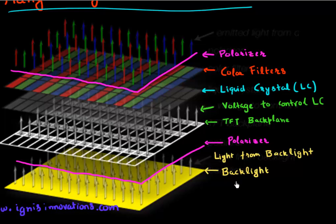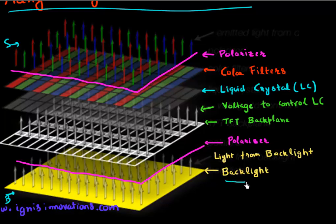So the very first layer, starting from the bottom all the way to the surface — this is the bottom and this is the surface of my LCD. I can see like seven or eight layers in between these two. The very first layer at the bottom is the backlight, which is giving the brightness to the LCD.